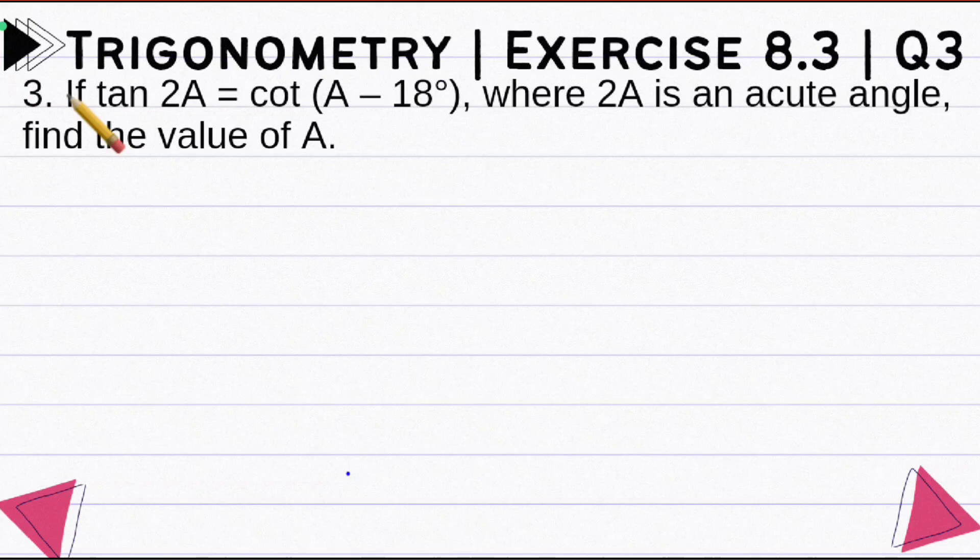Let's start with question 3 of exercise 8.3. If tan 2A equals cot(A minus 18°), where 2A is an acute angle, find the value of A. So 2A is an acute angle, which is less than 90°, and you have an equation given in which you have to find A's value.